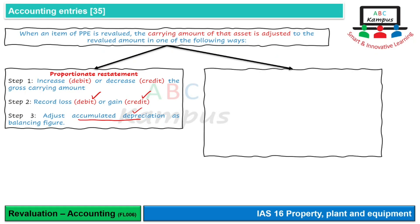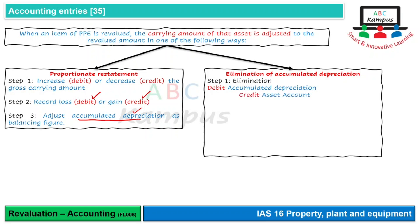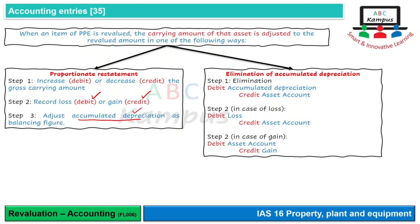दूसरा method है elimination of accumulated depreciation। इस method में दो steps हैं। पहला step है elimination - accumulated depreciation को ختم कर देते हैं। Accumulated depreciation का normal balance credit होता है, तो उसको zero करने के लिए debit कर देते हैं और asset account को credit कर देते हैं। Step two में अगर loss हो तो loss debit और asset credit, और अगर gain हो तो gain credit और asset account debit होता है।